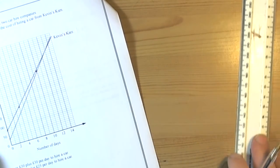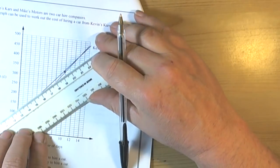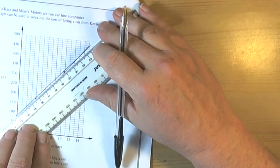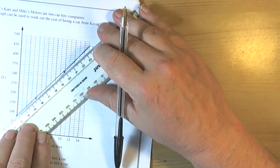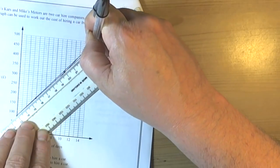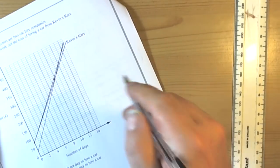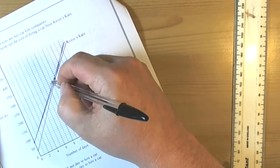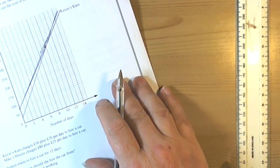Now I haven't drawn that as accurately as I should have done. This is where you should really do it in pencil, but never mind. Obviously you should do that in pencil so that you can rub out.